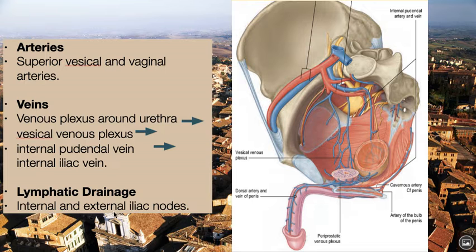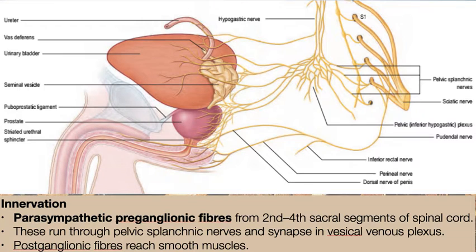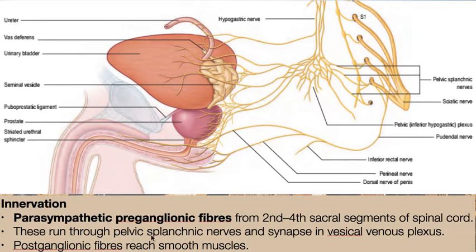Lymphatic drainage is into the internal and external iliac nodes. Regarding innervation, it is again similar to that of the male. The parasympathetic preganglionic fibers arise from the second to fourth sacral segments of the spinal cord, running through the pelvic splanchnic nerves and synapsing in the vesical venous plexus.